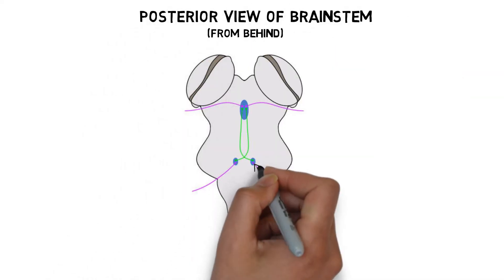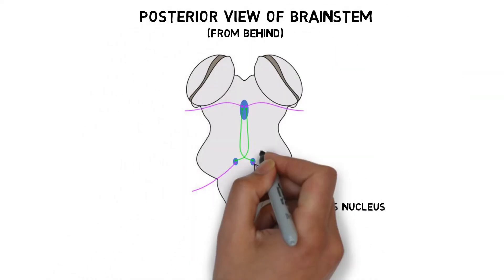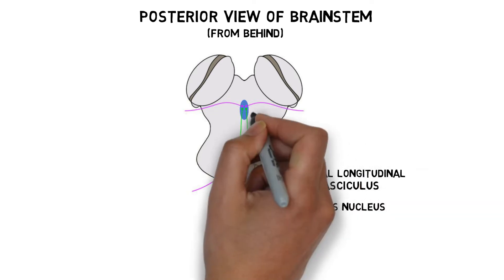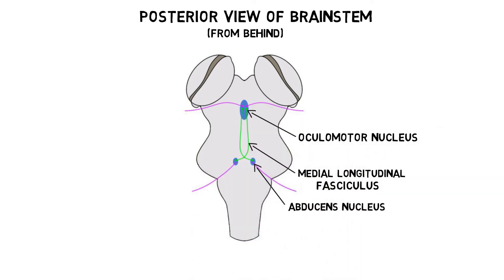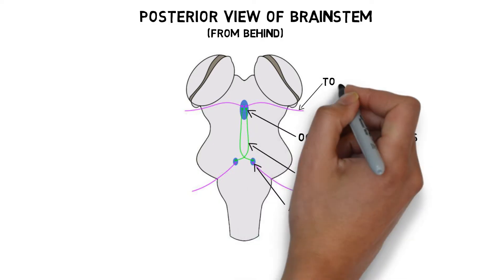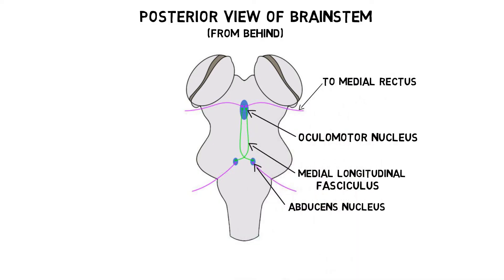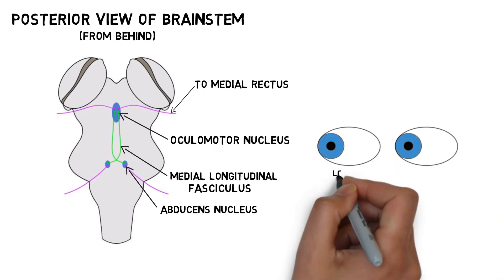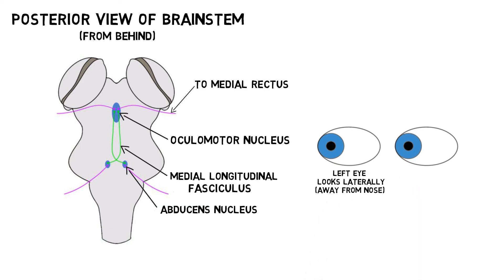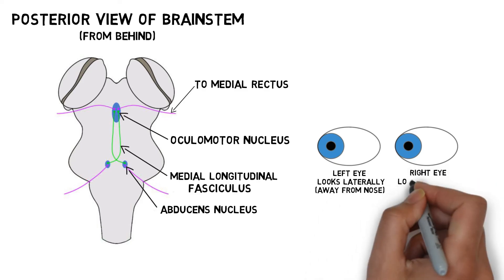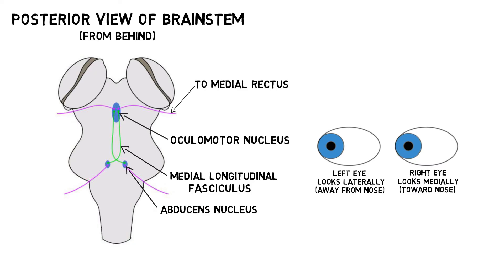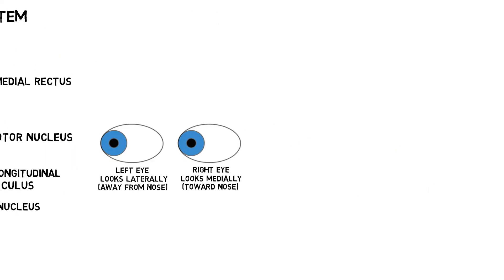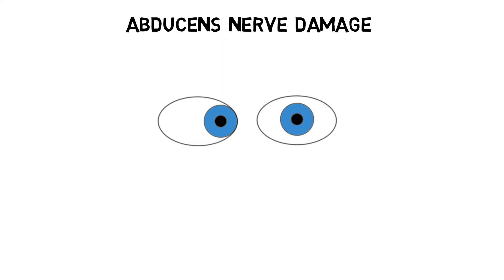Neurons from the abducens nucleus also travel through a pathway called the medial longitudinal fasciculus to the ocular motor nucleus, where they synapse on neurons that control the medial rectus muscle of the other eye. The medial rectus moves the eye inward. This pathway allows for coordination of eye movement, as when your abducens nerve allows you to look laterally with your left eye, the fibers that travel in the medial longitudinal fasciculus cause your right eye to look medially.